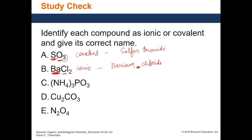For (NH4)3PO3: NH4 is the ammonium ion — whenever you see NH4, the compound is ionic. If you've memorized the polyatomic ions, you'd recognize PO3 as the phosphite ion. We don't use subscripts the same way here since this is ionic. Name the cation first: ammonium. Then the anion: PO3 is phosphite. The name is 'ammonium phosphite'.